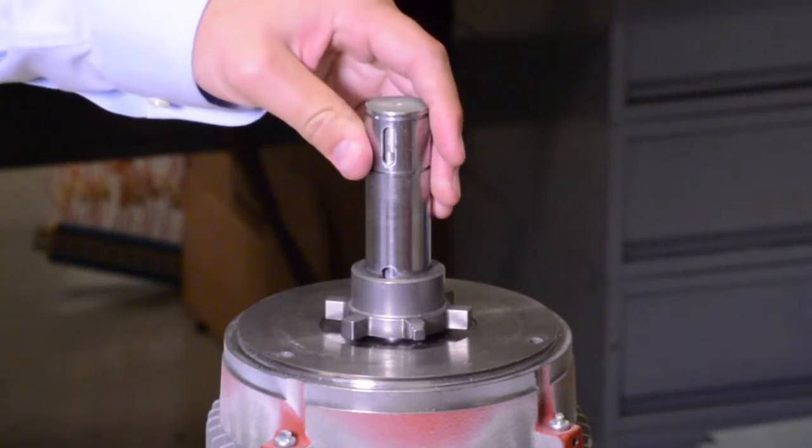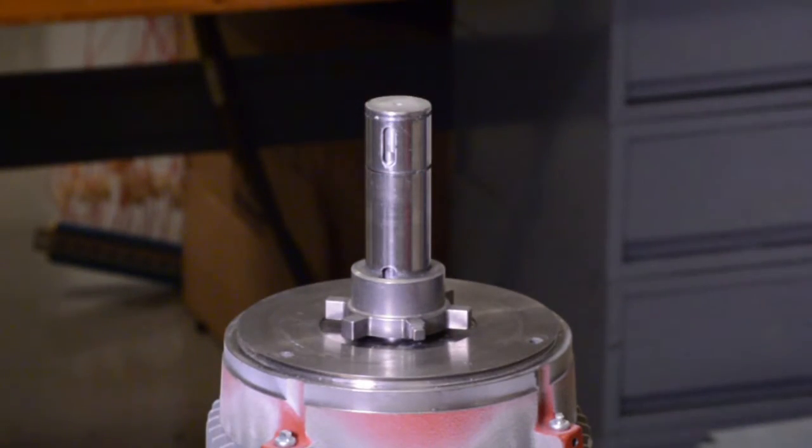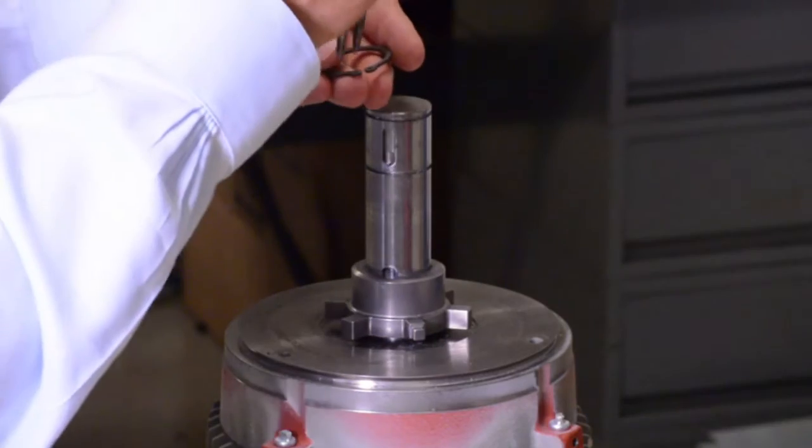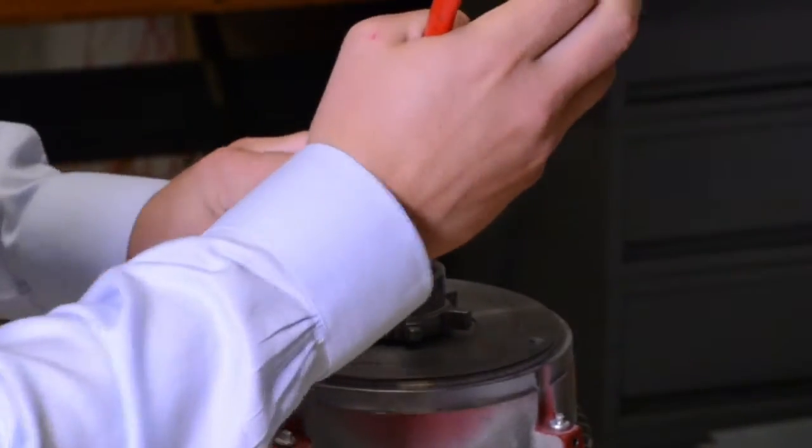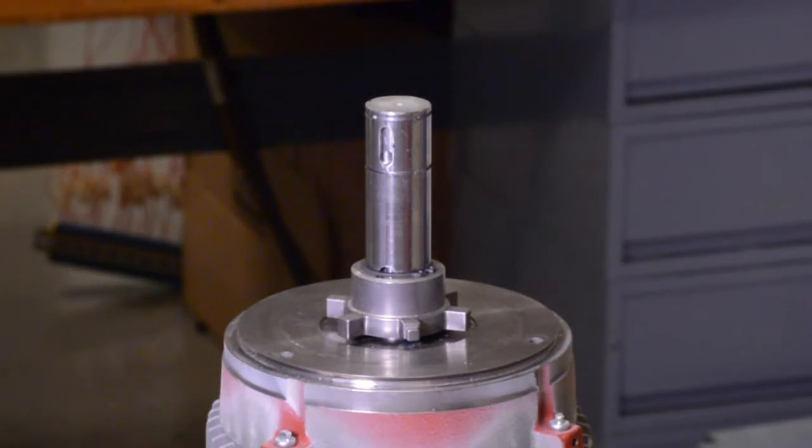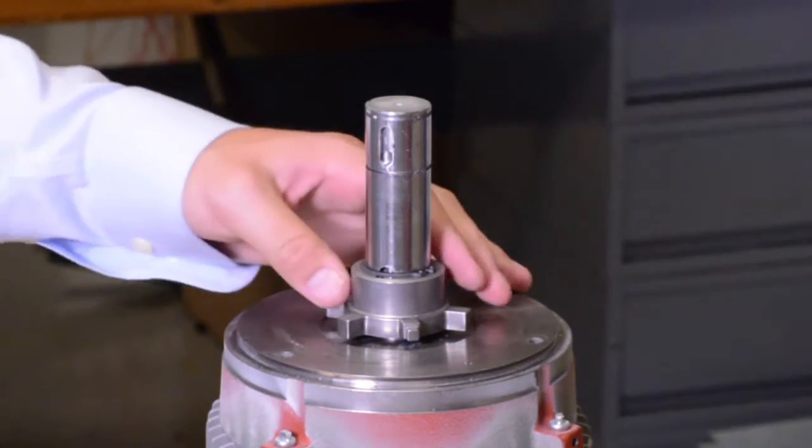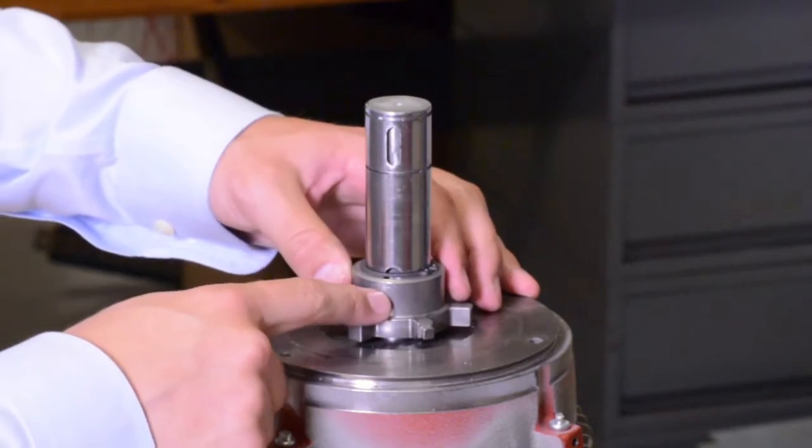We also have a snap ring on the top of the hub to prevent it from sliding axially along the shaft. Another common method to secure the hub axially is to use set screws.